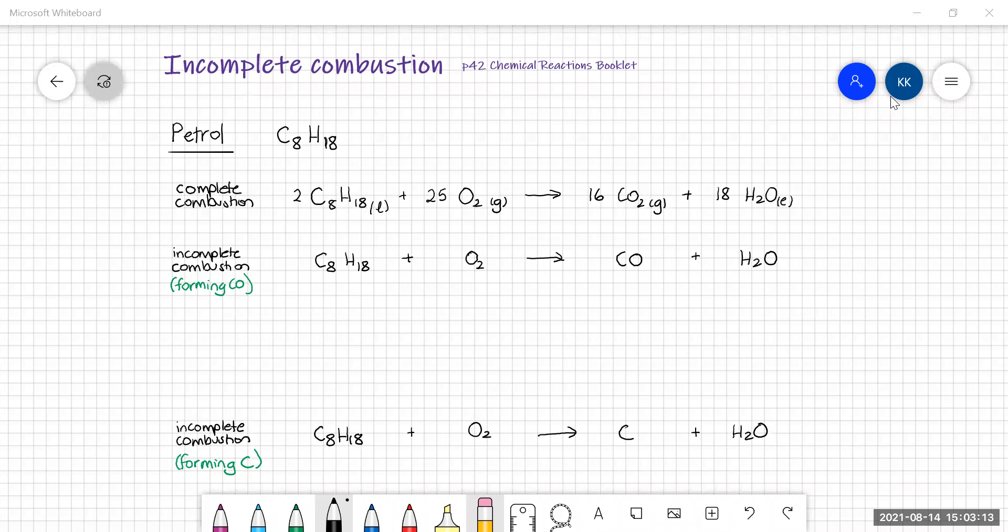Complete combustion, we talked about in our last video, is a reaction with oxygen to produce carbon dioxide and water. We learned how to balance equations for complete combustion, and we knew that the products were always going to be carbon dioxide and water. When it comes to incomplete combustion, we always produce water, but the carbon containing product changes to either carbon monoxide or carbon, which is soot. That's what causes the smoky exhaust.